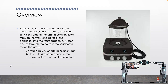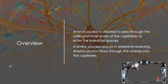Arterial solution fills the vascular system much like water fills the hose to reach the sprinkler. Some of the arterial solution flows through the walls and pores of the capillaries into the tissue spaces as water passes through the holes in the sprinkler to reach the grass. The magic number is 50% is lost to drainage because the vascular system is not a closed system.